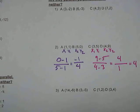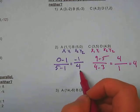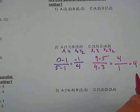So now we just have to decide if they're perpendicular or neither. The way we decide if they're perpendicular is we flip the fraction and change the sign on one of them. And if we get the slope of the other one, then we know that they are perpendicular.